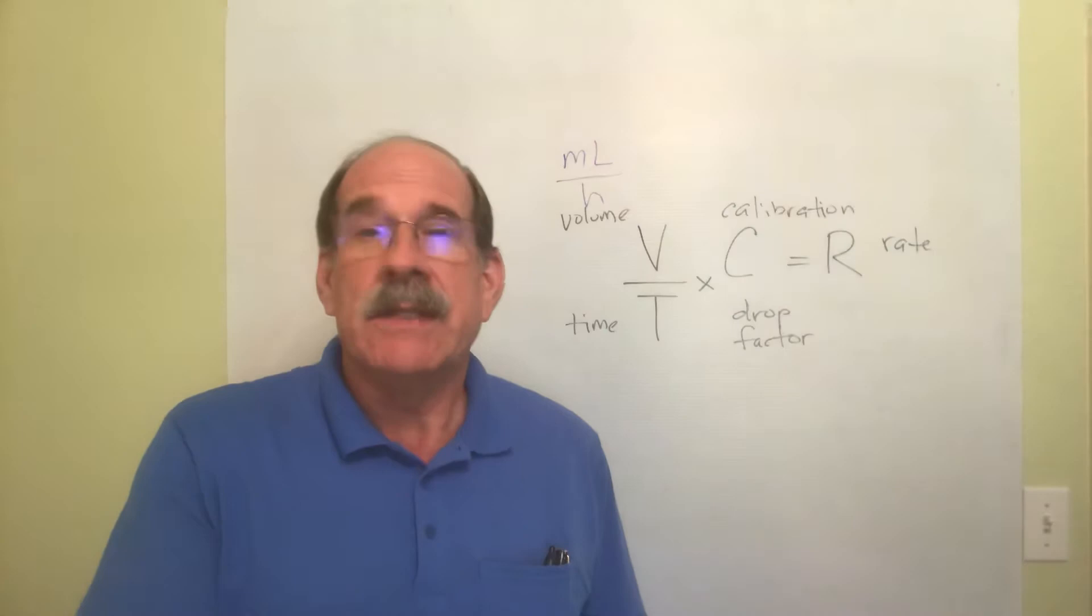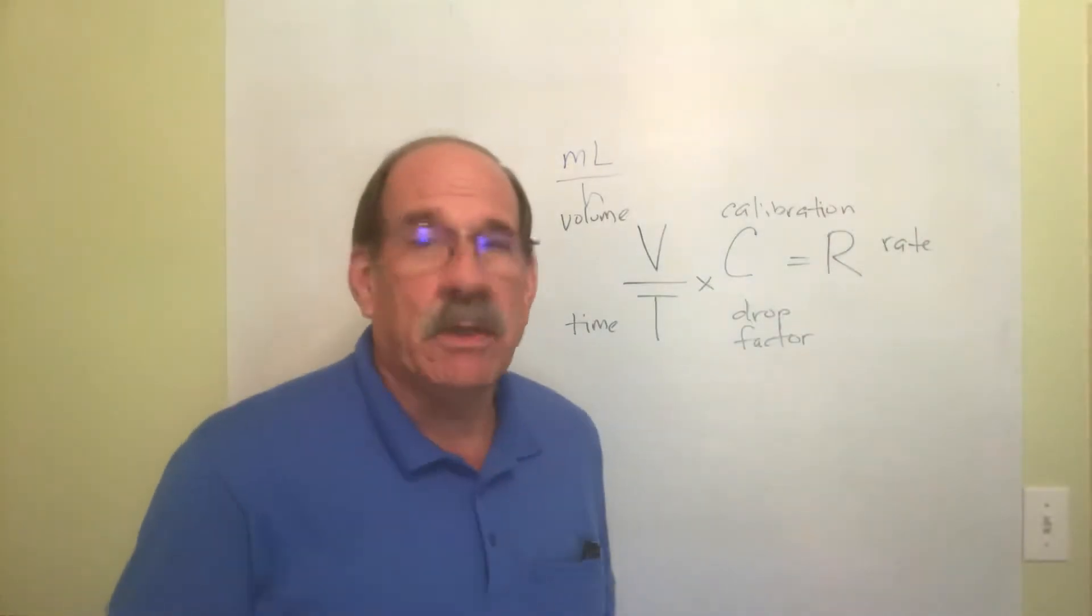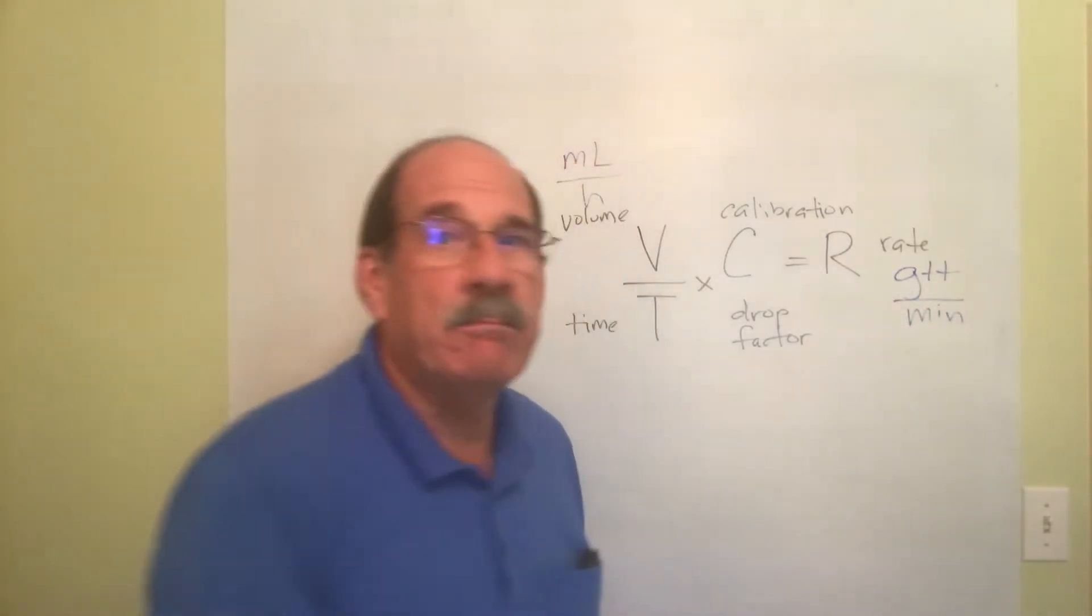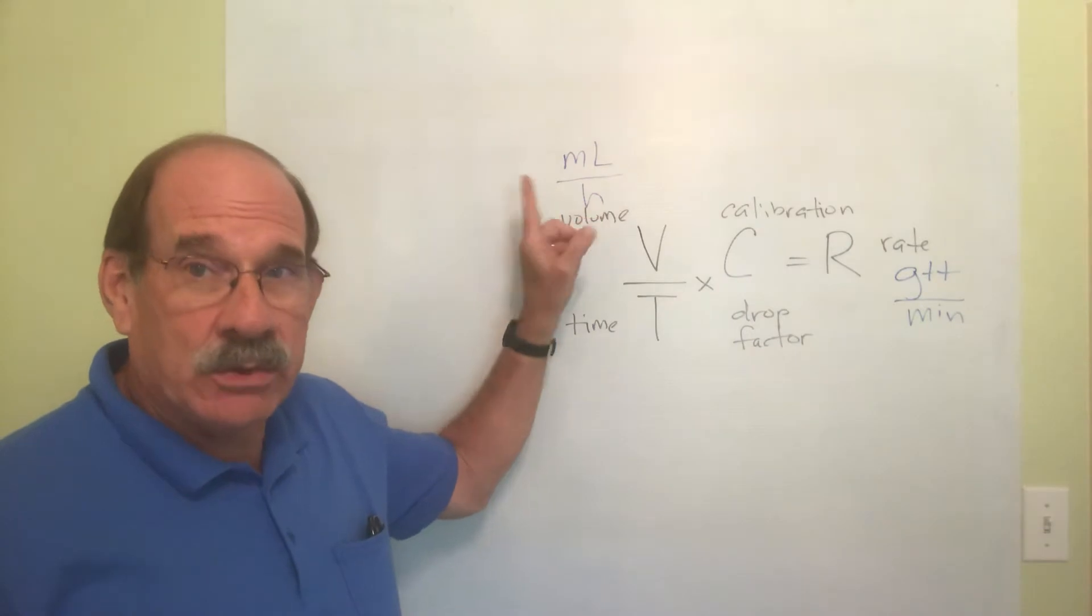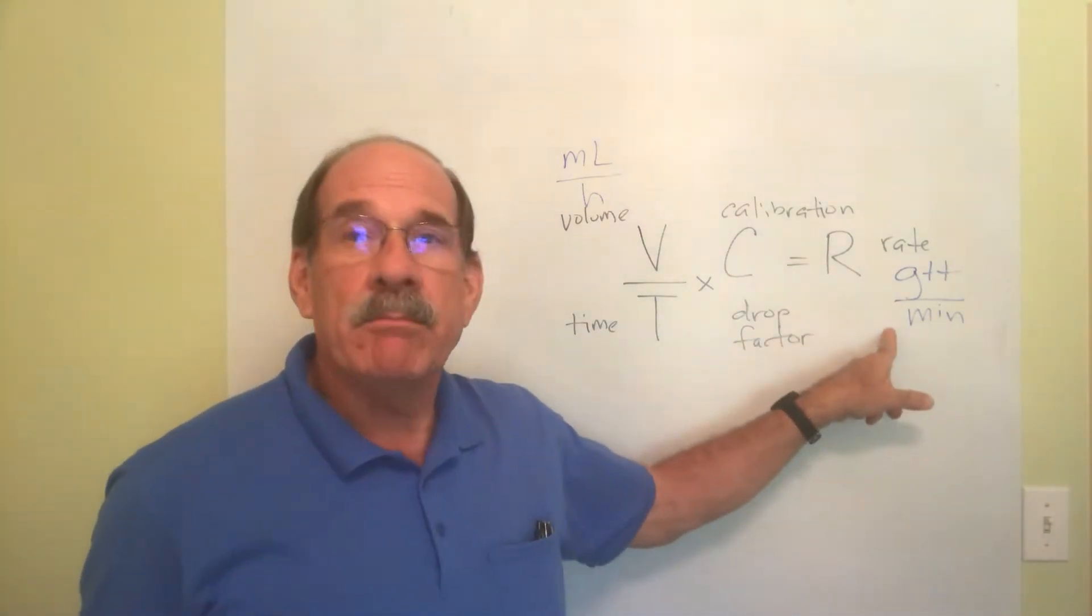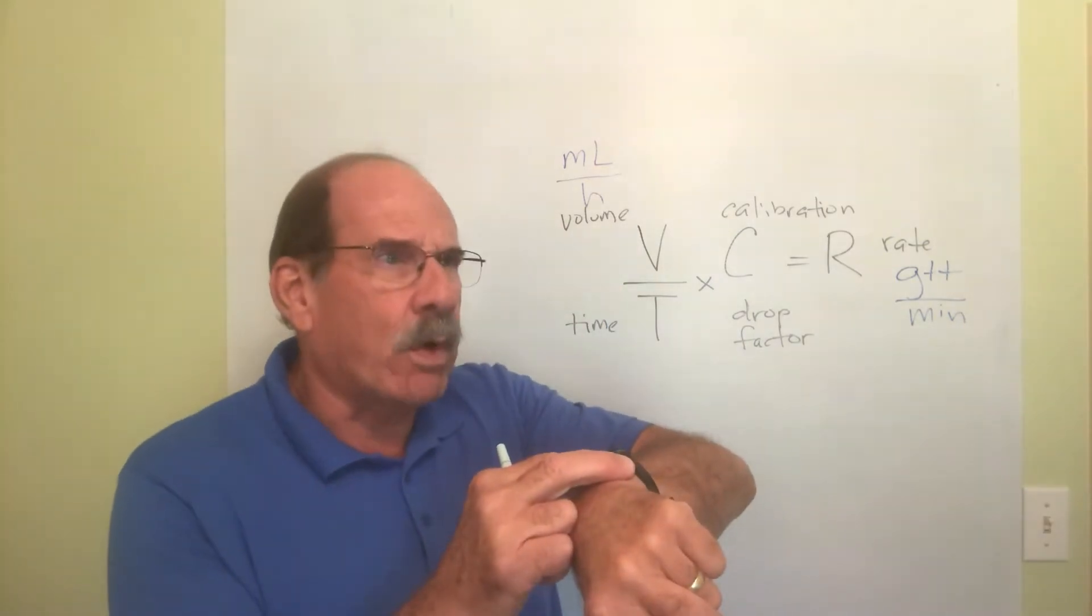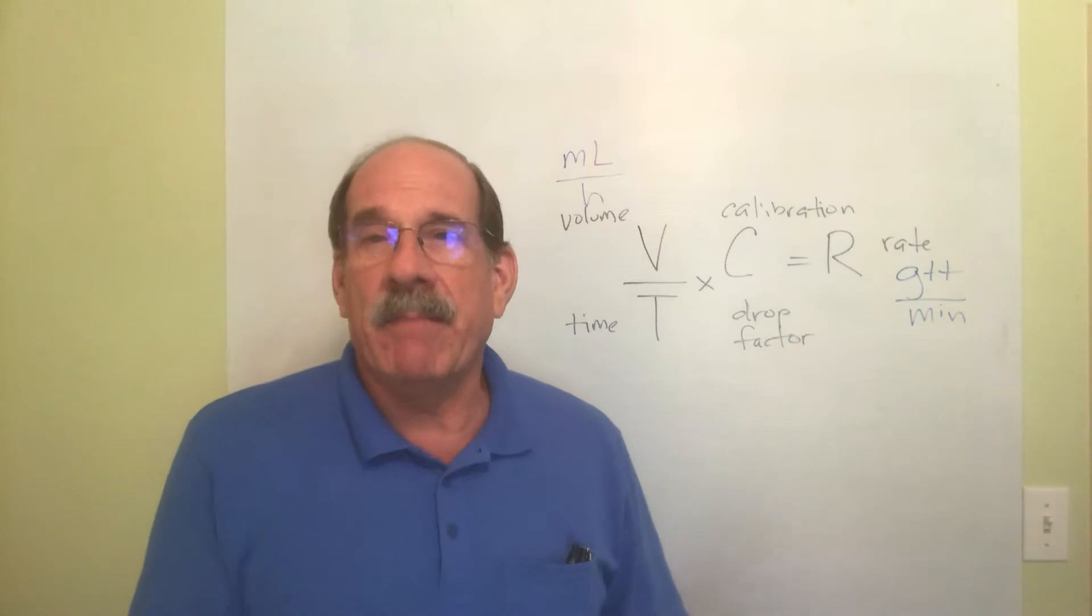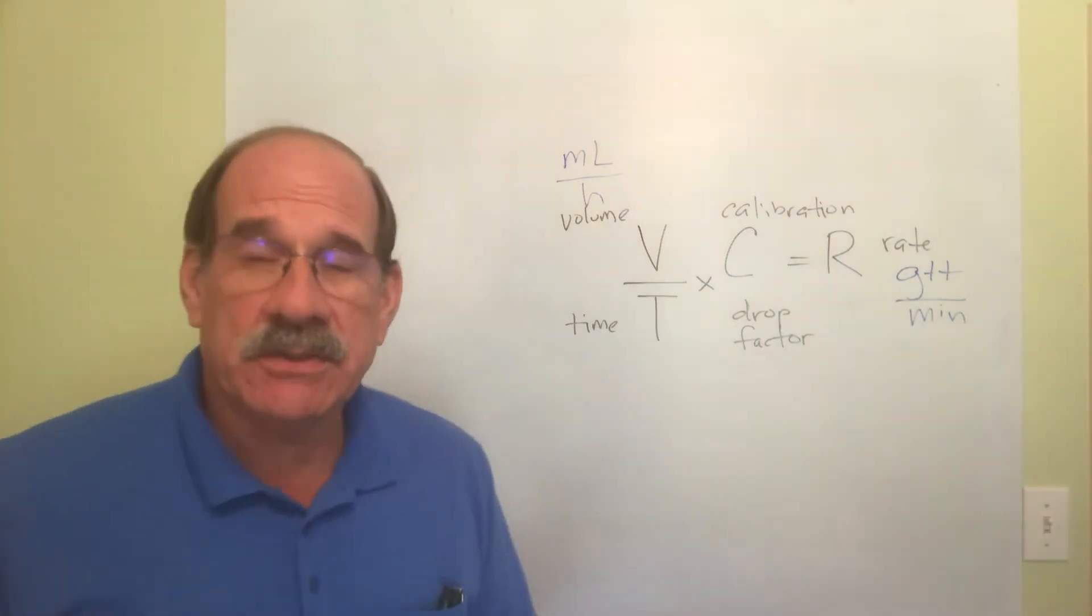Whether you call it a manual IV set, hand calibrated IV set, or gravity flow IV set, there's no machine involved. When you have no machine, you're going to have to find the number of drops per minute. You must calculate the number of drops per minute, and then you'll get your watch and count one, two, three, four, five. When it's dripping at the proper rate, you've done it correctly.